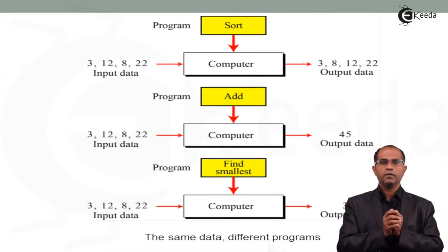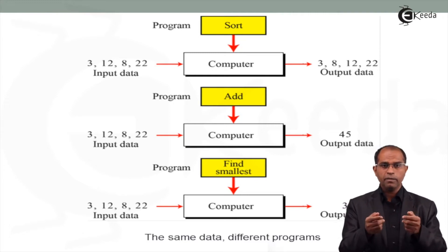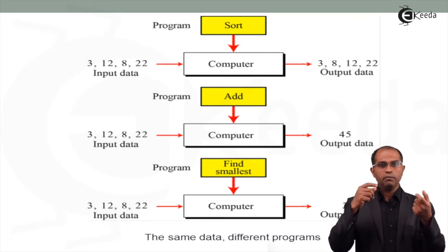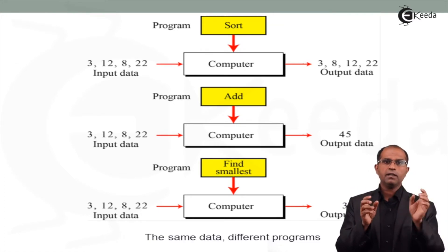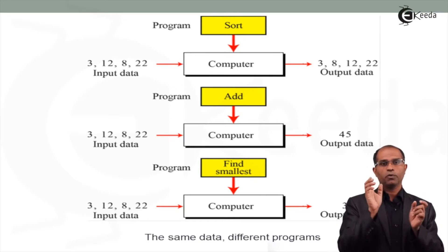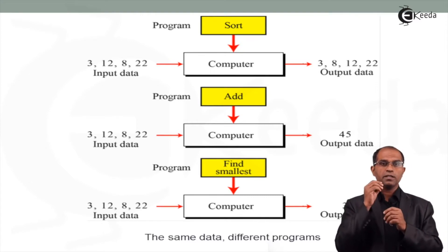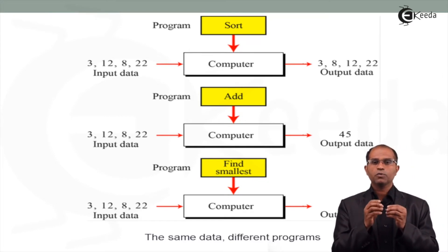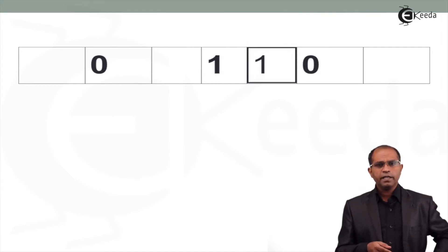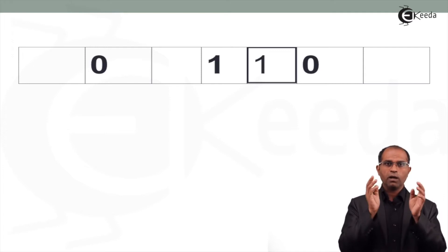For example, with input data 3, 1, 2, 8, 2, 2, I can write a program called 'sort' to sort those numbers. Then, without changing the data, I can use a program called 'add' to add all the numbers. The data remains the same; only the program changes. That is how Alan Turing thought about computation back in 1936.